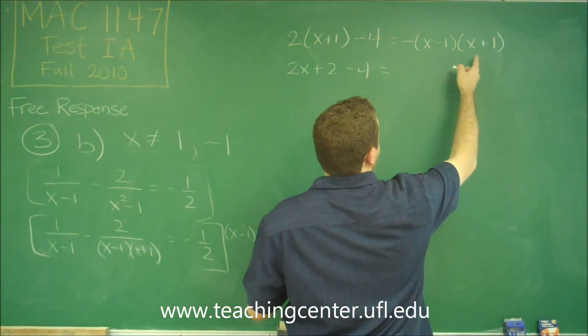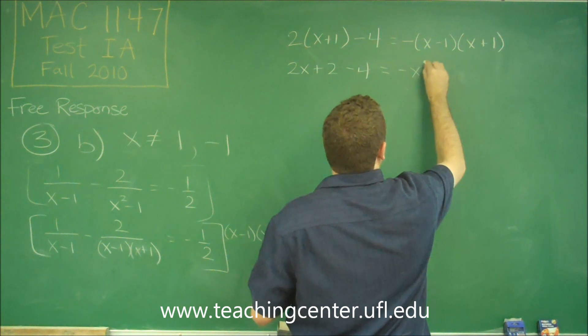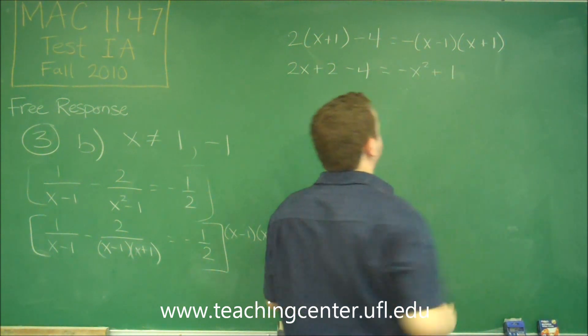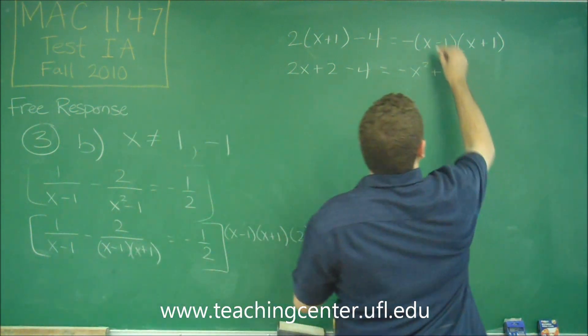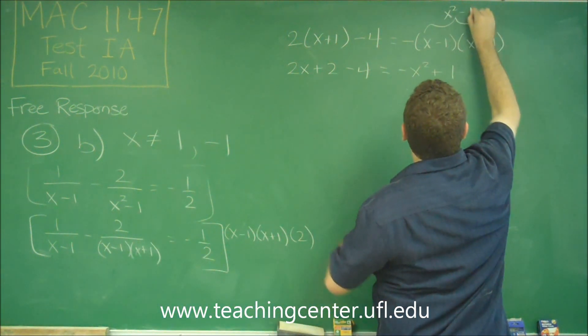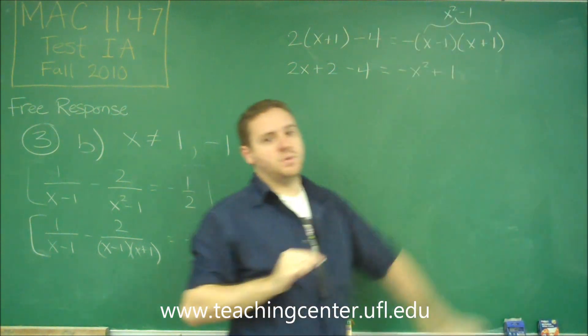And over here, this is just x squared minus 1, but it's negative, so we'll have negative x squared plus 1, if we distribute that negative. Remember that this is the difference of two squares. So this right here is x squared minus 1, but we have to do the negatives to both of them.